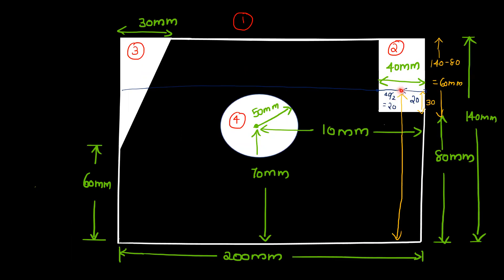Now the second figure centroid is established. x2 is the distance from the Y-axis. This region is at 160 plus 20 equals 180 mm. For y2, 60 divided by 2 equals 30, and 80 plus 30 equals 110 mm. That gives y2 equals 110 mm.